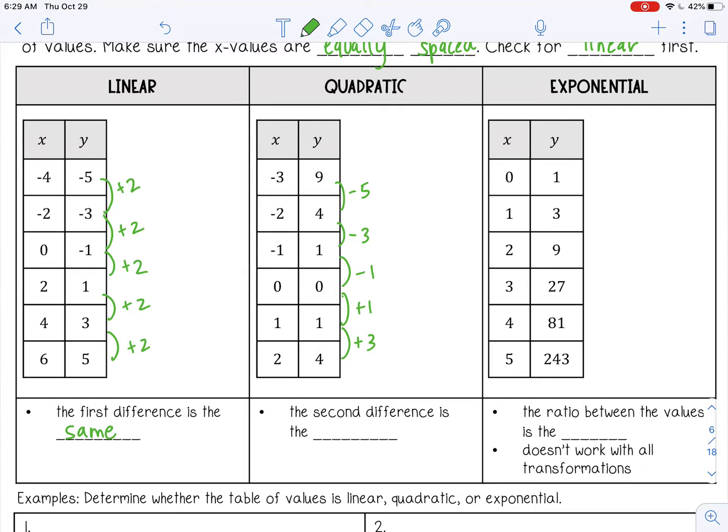What you can do if you determine they're not linear is find what's called the second difference. So take this set of numbers that we just found, and I'm going to use a different color, and find the difference between those. And the difference just means what are you adding or subtracting to get from one number to the next. So from negative 5 to negative 3, that's plus 2. From negative 3 up to negative 1, add 2. From negative 1 to 1, add 2. This is looking a lot like that linear. And then from 1 to 3, add 2.